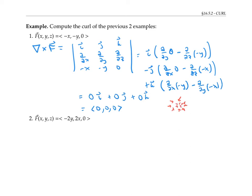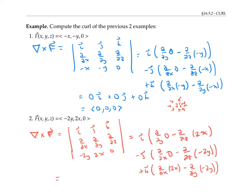Let's do another example. For the second example, if we compute the gradient cross F and work out the cross product, we end up with 0i plus 0j plus 4k.